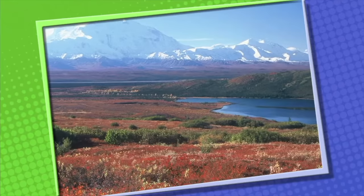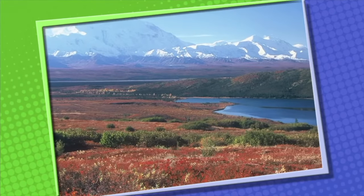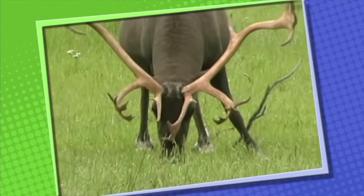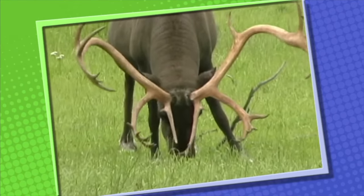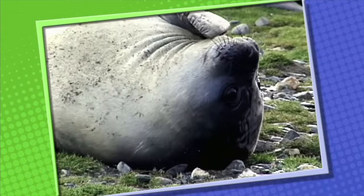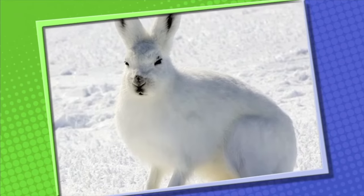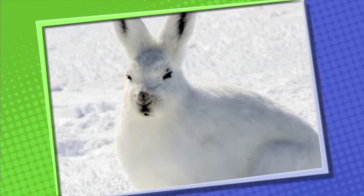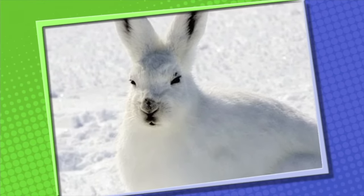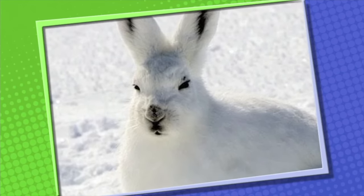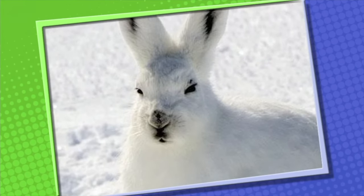The tundra habitat offers very little shelter from the weather. However, some animals do live on the tundra. They include caribou, seals, brown bears, and a variety of unusual birds. Some animals who live on the tundra have adapted to the seasonal changes of their habitat by changing the way they look. For example, the arctic hare protects itself by changing to a lighter colored fur in the winter. The light colored fur helps it to blend in with the ice and snow to protect it from predators.